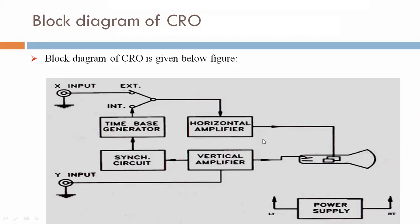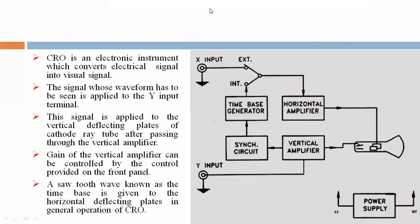Now, we are discussing these blocks one by one. Again, CRO is an electronic instrument which converts electrical signal into visual signal. The signal whose waveform has to be seen is applied to the Y input terminal.